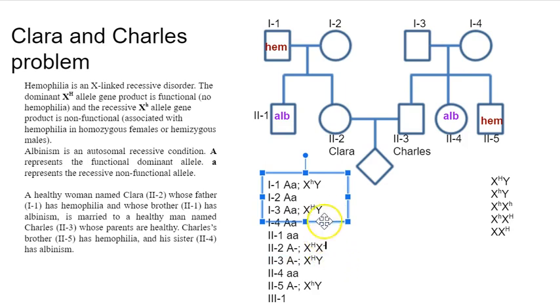Because she could have inherited an X little h and be a carrier herself because her mom, 1-2, we don't know the mom's status with regards to hemophilia. It's a relatively rare thing, so statistically it's likely she's X big H, X big H. But this family seems to be having kind of a little bit of bad luck genetically. So we're just going to go with exactly what we know. And we're going to say that mom is a dash.